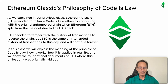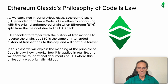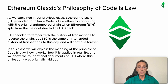As we explained in our previous class, Ethereum Classic decided to follow a Code is Law ethos by continuing with the original untampered chain when Ethereum ETH split from the mainnet due to the DAO hack. ETH decided to tamper with the history of transactions to reverse the chain, but ETC is the same uninterrupted history of transactions to this day and will continue forever. In this class, we will explain the meaning of the principle of Code is Law, how it works, how it is applied in real life, and we show the foundational documents of ETC where this philosophy was originally laid out.